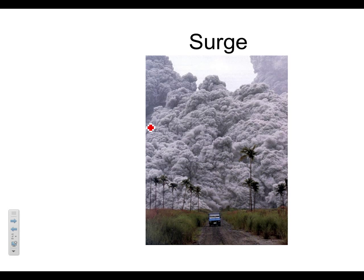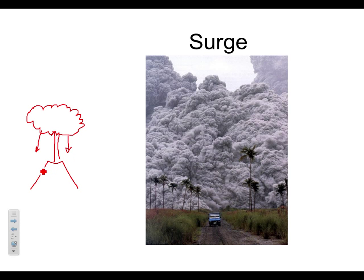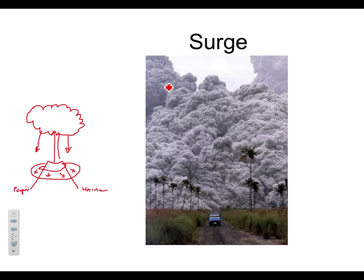A surge is a vertical pyroclastic flow — instead of going out the side, it goes vertically. Vesuvius is a good example: it erupted vertically with a huge cloud that then fell as a ring around the volcano — like a donut — and the surge went out and destroyed everything. Pompeii would be on one side, Herculaneum on the other. Mount Pinatubo was another vertical surge. So: a surge is a vertical pyroclastic flow, and a nuée ardente is a lateral pyroclastic flow.